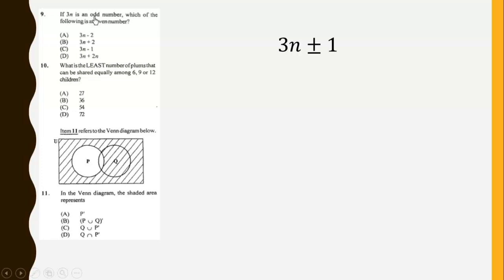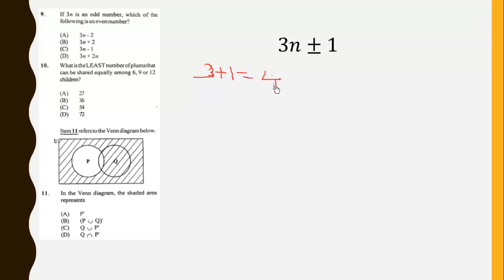If 3N is an odd number, then if we subtract 1 or add 1 it becomes even. For example, the odd number 3 — if we add 1 it becomes 4, which is even; if we subtract 1 it becomes 2, which is even. So you either subtract or add 1 to an odd number to get an even number.